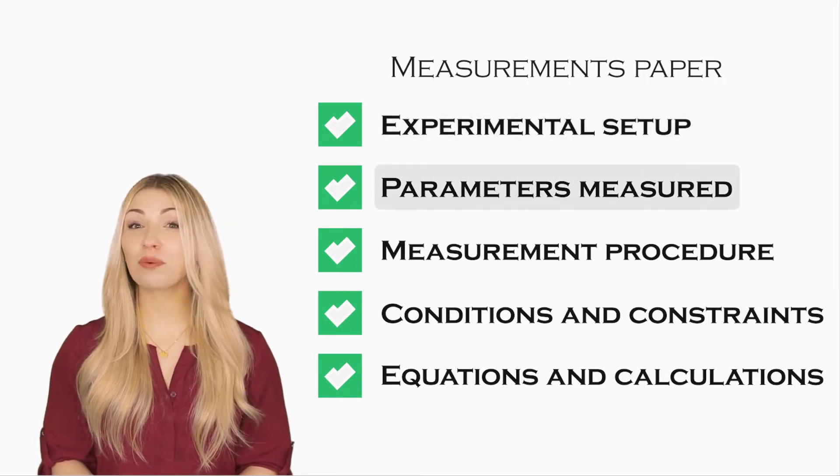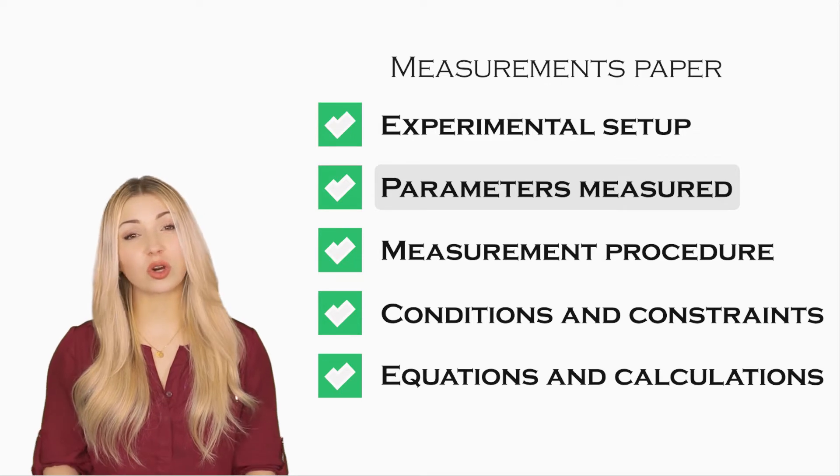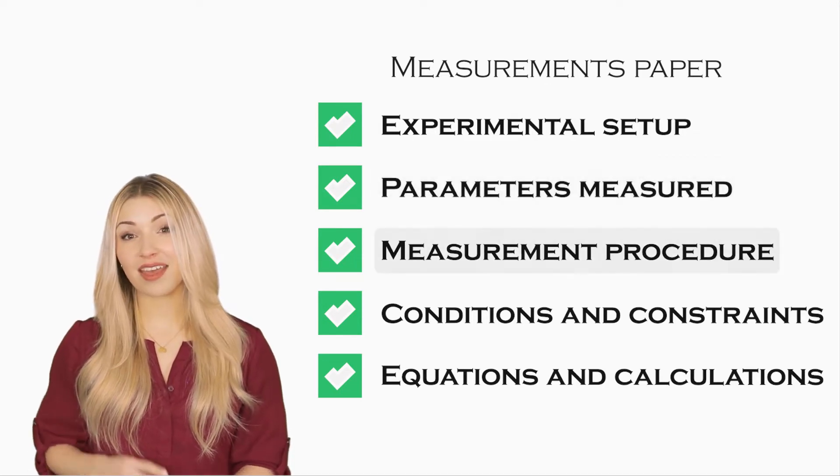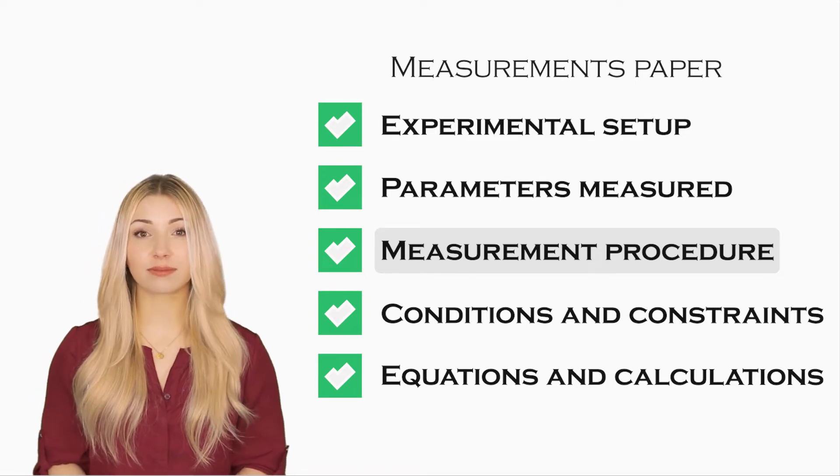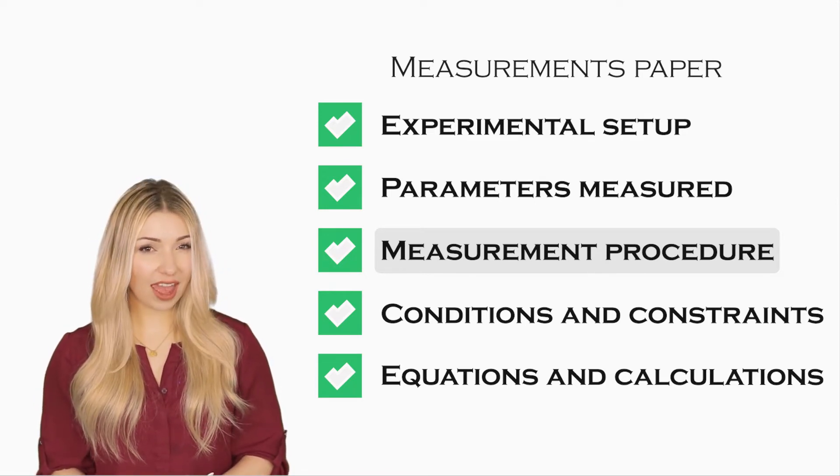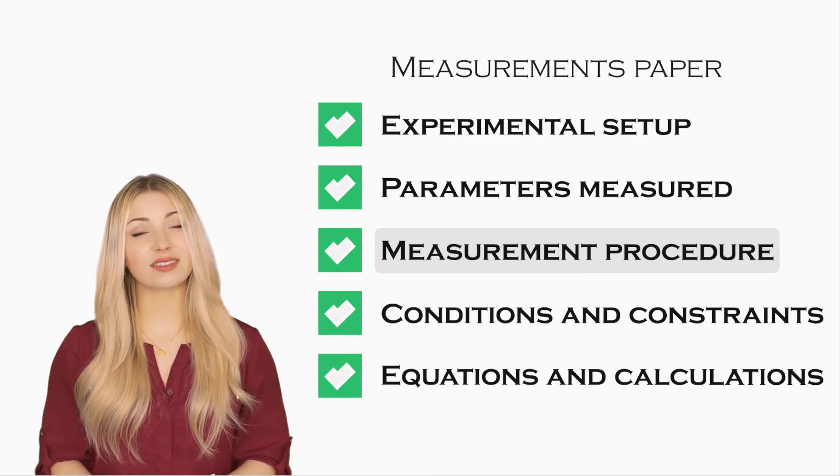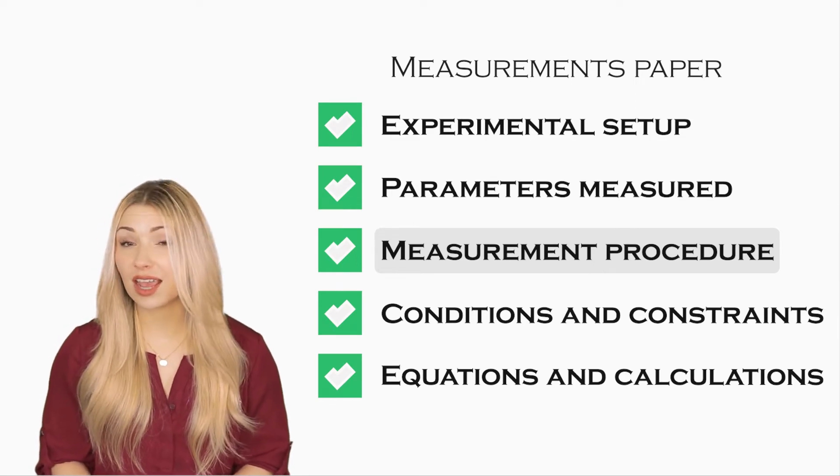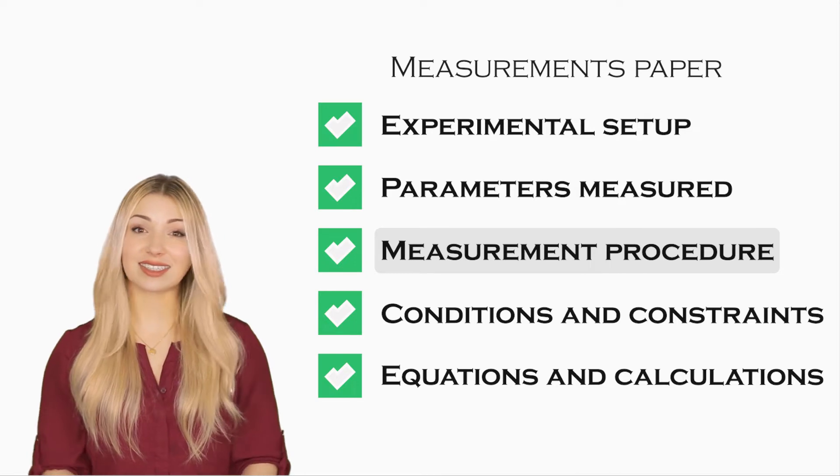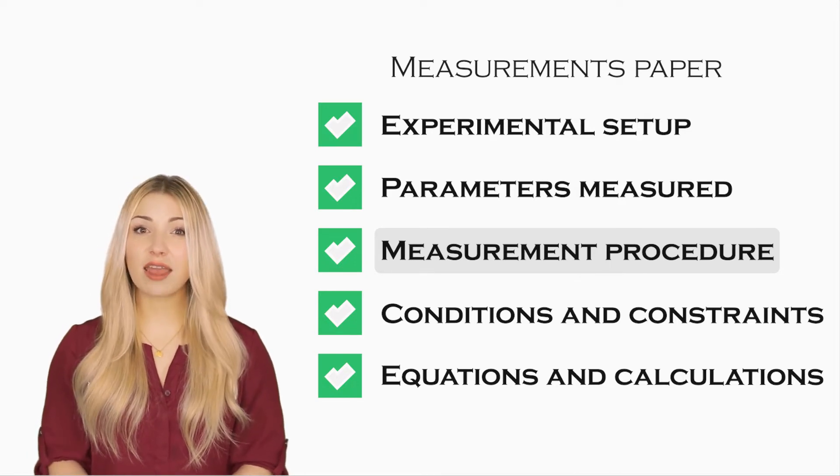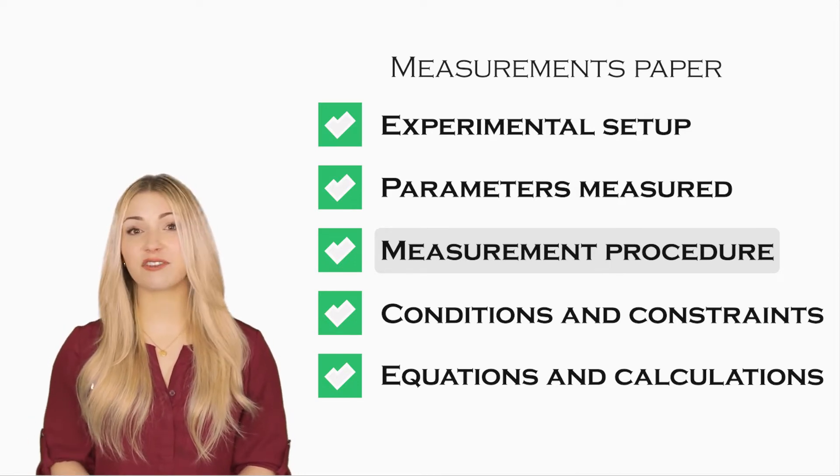Then you can talk about the parameters that were measured during the experiment. Then you can talk about the actual measurement procedure. How were the samples prepared for the measurements? How many measurements were taken? Were the measurements repeated for consistency? Was there a time interval between successive measurements?